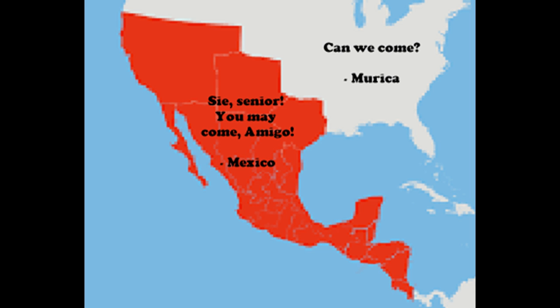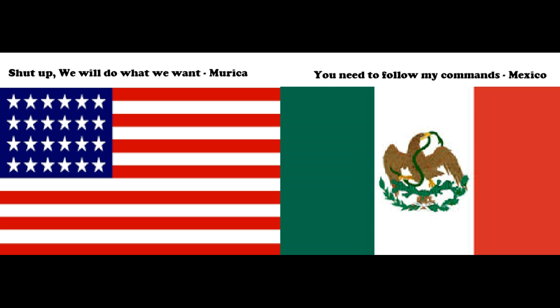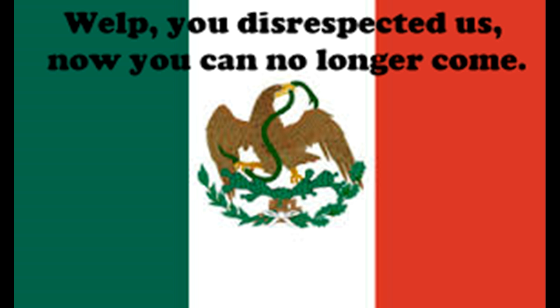In order to increase their population, the Mexican government announced that they would allow American settlers into Mexico. However, they had to meet various different conditions. They had to convert to Catholicism, get rid of their slaves, and pledge loyalty to Mexico. But almost all settlers were Protestant, had slaves, and were loyal to the U.S. government, which eventually led Mexico to close their borders in 1830, but it was already too late.